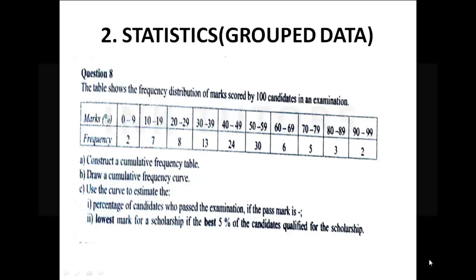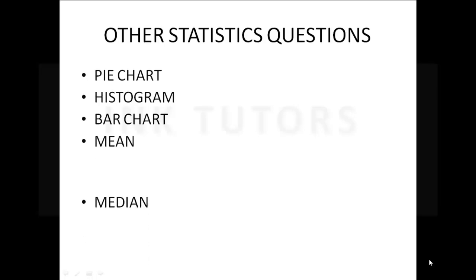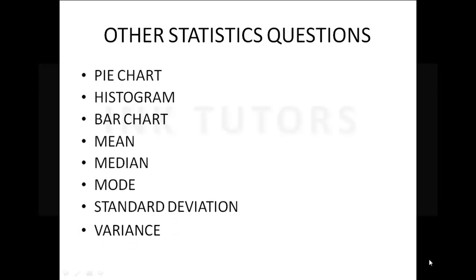The second question is statistics — a question that repeats almost every year with a large bank of questions. We have grouped data and ungrouped data. You'll be discussing cumulative frequency, median, mode, standard deviation, and variance. Check your past WAEC questions — in the past 10 years, statistics showed up about nine times, making it a sure banker question. Topics include pie chart, histogram, bar chart, mean, median, mode, standard deviation, and variance.